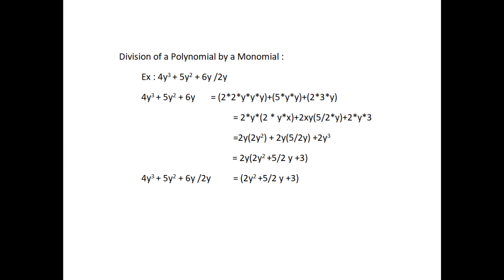Next, division of a polynomial by a monomial. Consider the example (4y³ plus 5y² plus 6y) divided by 2y. Here 4y³ plus 5y² plus 6y equals 2 into 2 into y into y into y plus 5 into y into y plus 2 into 3 into y. We find 2y is common in each term. Therefore, we get 2y into (2y² plus 5/2 y plus 3). Hence, (4y³ plus 5y² plus 6y) divided by 2y equals 2y² plus 5/2 y plus 3.